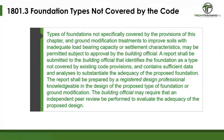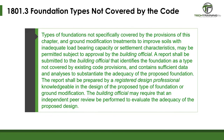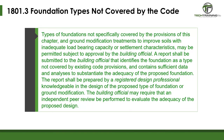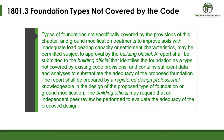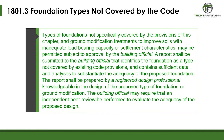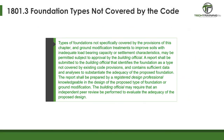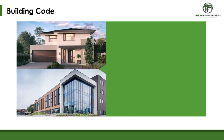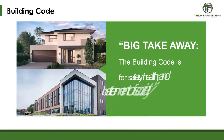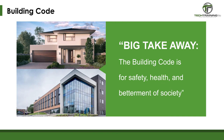Here is a Massachusetts edition: 1801.3, Foundation Types Not Covered by the Code. It states that if a particular soil is considered unsuitable as a bearing capacity soil or has unusual settlement characteristics, the soil can be modified to obtain the appropriate bearing capacity, but a report must be issued by a design professional with all of the appropriate data. Putting this together with the building code information we discussed earlier, we see that model building codes provide a mechanism for local jurisdictions to adopt, implement, and update their building codes to provide for the health, safety, and comfort of their citizens. The big takeaway: the building code is for safety, health, and betterment of society.